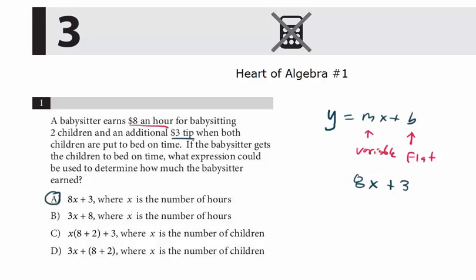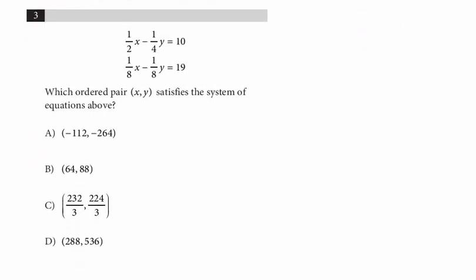All right, let's do the next algebra question, number three. Which ordered pair (x, y) satisfies the system of equations above? A very common question type on the new test, system of equations. You'll probably see three, maybe four questions. Some of which will be in straight equation form, like this one. Others might be a word problem. And there are really three ways to solve these types of problems.